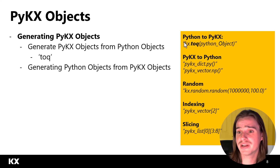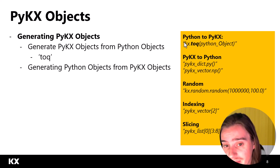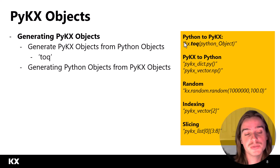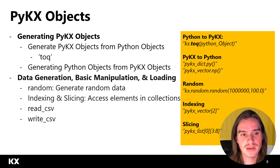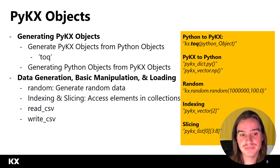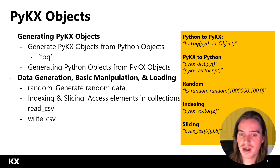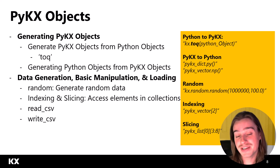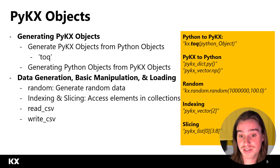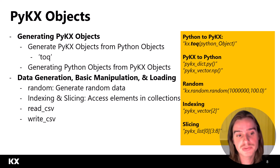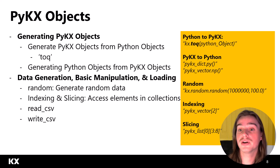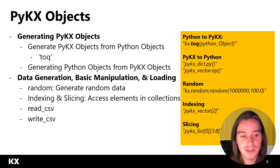We'll also understand how we can go from PyKx data types back to Python data types if necessary. And then finally, we'll use PyKx to do some basic data generation using the random functionality, some basic manipulation of our objects, some indexing and slicing so we can access elements within our collection objects, and we'll learn how to read in data to PyKx with ReadCSV and write out data from PyKx with WriteCSV.